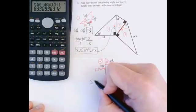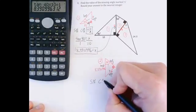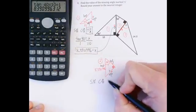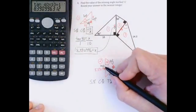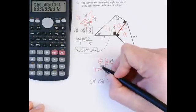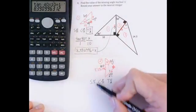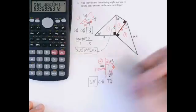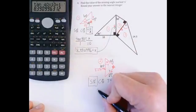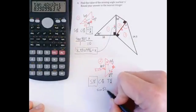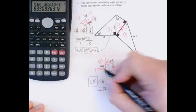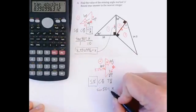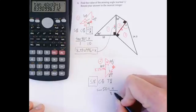So out of SOH, CAH, and TOA, I want opposite, I have hypotenuse. That's the O and the H. O and H are in the first one here, SOH. I'm going to write it out, sin of 50 degrees equals opposite divided by hypotenuse, X divided by 8.390996.